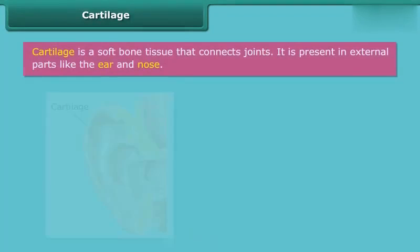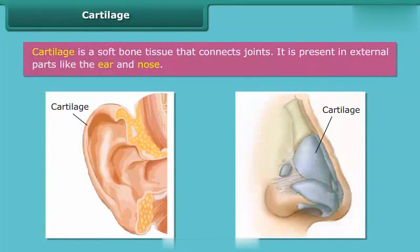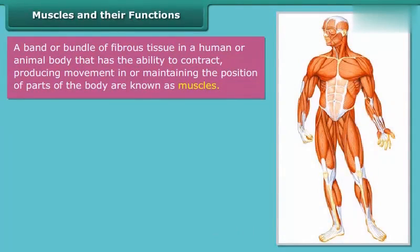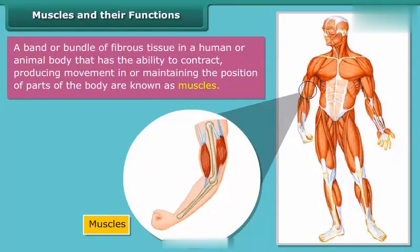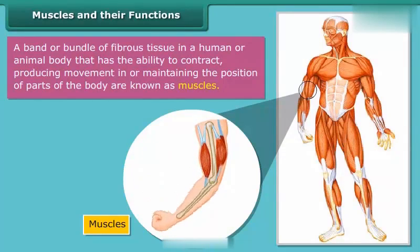Cartilage is a soft bone tissue that connects joints. It is present in external parts like the ear and nose. A band or bundle of fibrous tissue in a human or animal body that has the ability to contract, producing movement in or maintaining the position of parts of the body, is known as muscles. The movement of body is controlled by alternate contractions and relaxations of two sets of muscles.